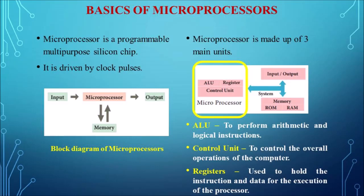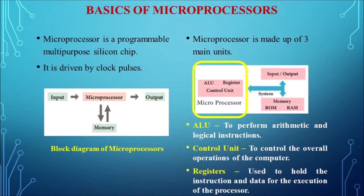In the block diagram of the microprocessor, input is given to the microprocessor, and from the memory it takes the instruction; based on that it processes the input and produces the output. The microprocessor is mainly made up of three main units: the ALU (arithmetic logic unit), the control unit, and memory — here called registers. The ALU performs all arithmetic and logical instructions. The control unit controls the overall operations of the computer using signals. The registers are internal memory used to hold instructions and data for execution.